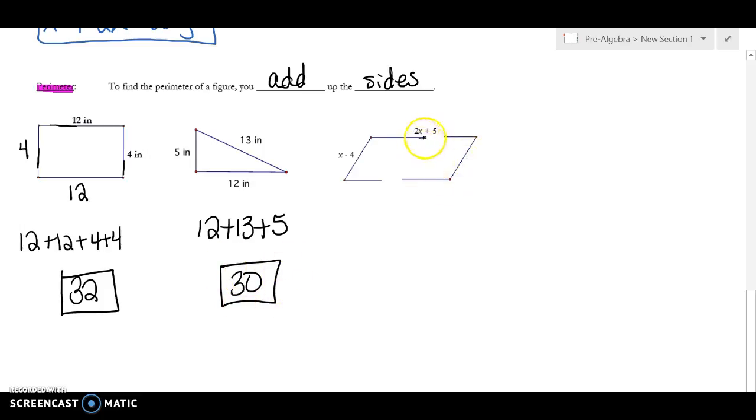Now this one's a little different because it's a parallelogram, but again, it's the same, add up all the sides, but it has variables. So I'm going to put a 2x + 5 on the bottom and an x - 4 on the right because opposite sides are equal. So now, let's change colors so you can see what I'm doing. My top is 2x + 5. My bottom is 2x + 5. My left is x - 4. My right is x - 4. And now I'm going to add this.